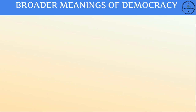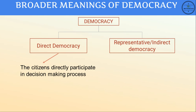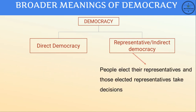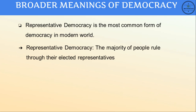Now let's look at the broader meaning of democracy. We have understood democracy as a form of government. There are two kinds of democracy: first, direct democracy, where citizens directly participate in the decision-making process; and second, representative or indirect democracy, where people elect their representatives and those elected representatives take decisions. Representative democracy is the most common form in the modern world and means the majority of people rule through their elected representatives.